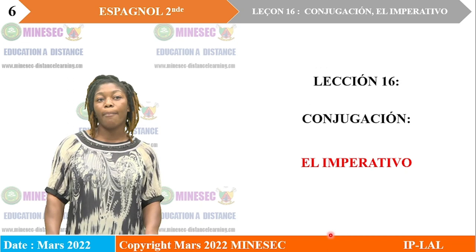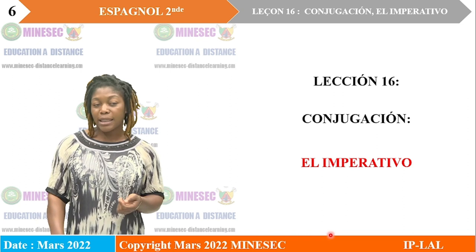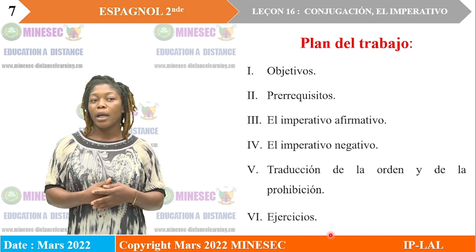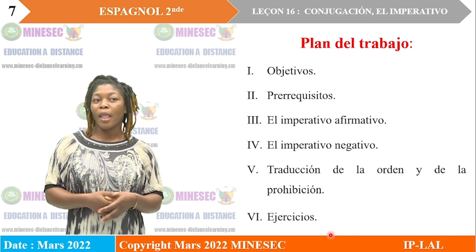Ahora vamos a pasar a la lección de hoy. Es un curso de conjugación: el imperativo. Y para pasar a este curso, hay un plan de trabajo. El plan de trabajo va a seguir seis niveles. El primer nivel, vamos a hablar de objetivos. Los objetivos de la clase.